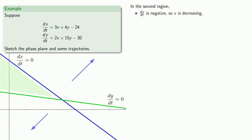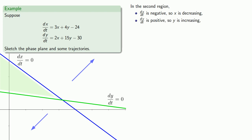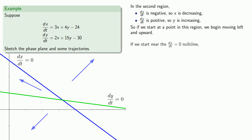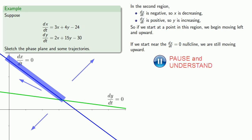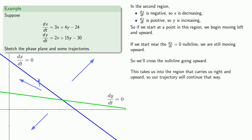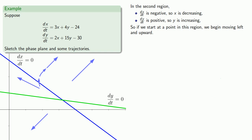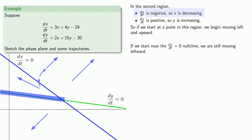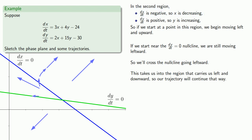In the second region, dx/dt is negative so x is decreasing, and dy/dt is positive so y is increasing. If we start at a point in this region, we begin moving left and upward. If we start near the dx/dt equals zero null cline, dx/dt is close to zero but dy/dt is still positive, so we are still moving upward. We'll cross that null cline going upward, taking us into the region with trajectories moving right and upward. If we start near the dy/dt equals zero null cline, we are still moving leftward, cross it going leftward, and continue left and downward.